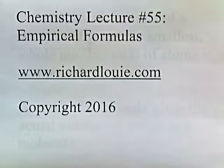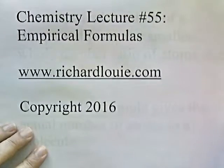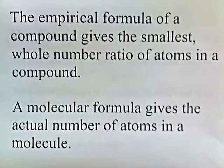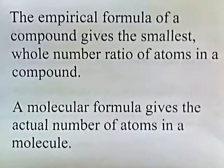Chemistry Lecture Number 55, Empirical Formulas. The empirical formula of a compound gives the smallest whole number ratio of atoms in a compound. A molecular formula gives the actual number of atoms in a molecule.